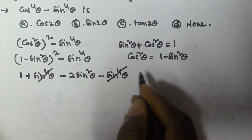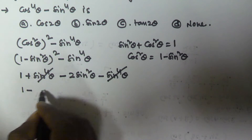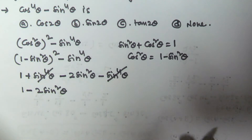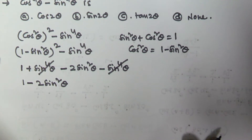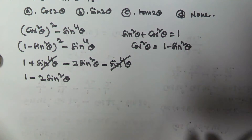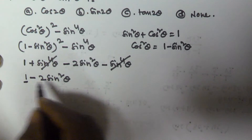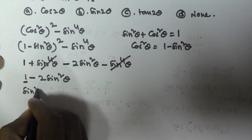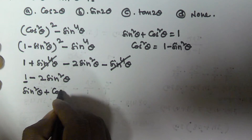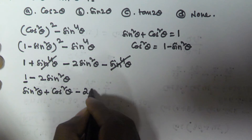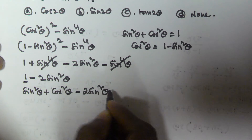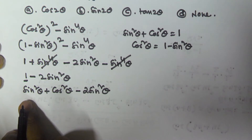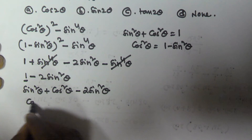The sine to the power of 4 terms cancel, leaving 1 minus 2 sine squared theta. Now I substitute 1 with sine squared theta plus cos squared theta, giving sine squared theta plus cos squared theta minus 2 sine squared theta, which simplifies to cos squared theta minus sine squared theta.